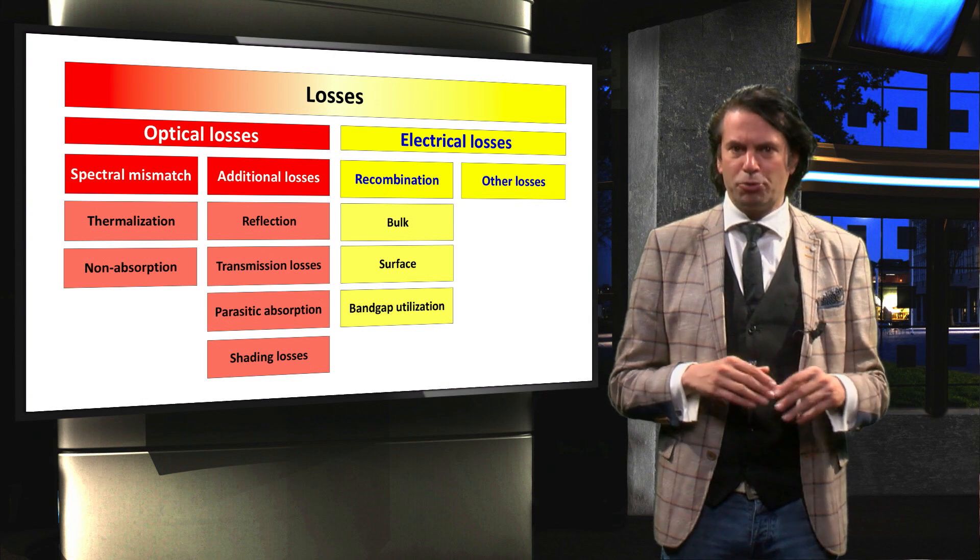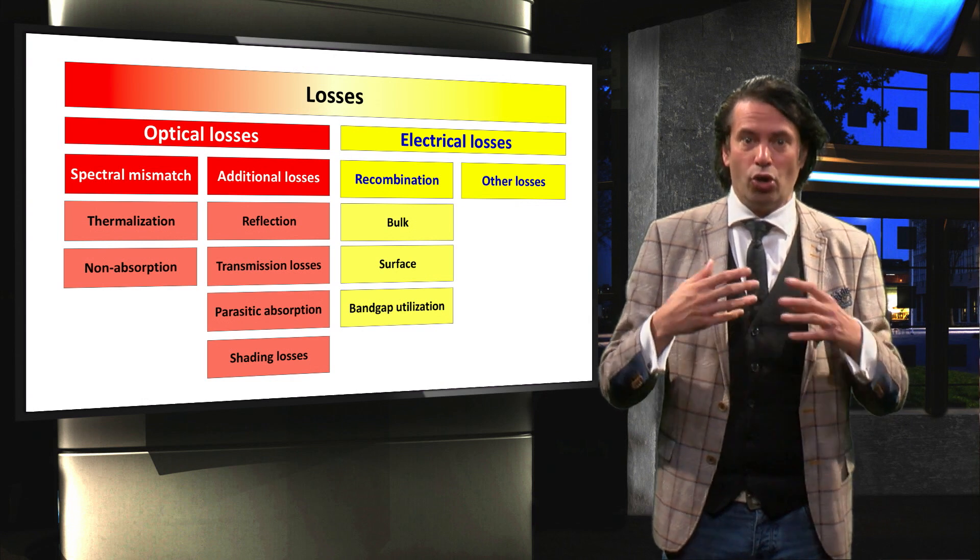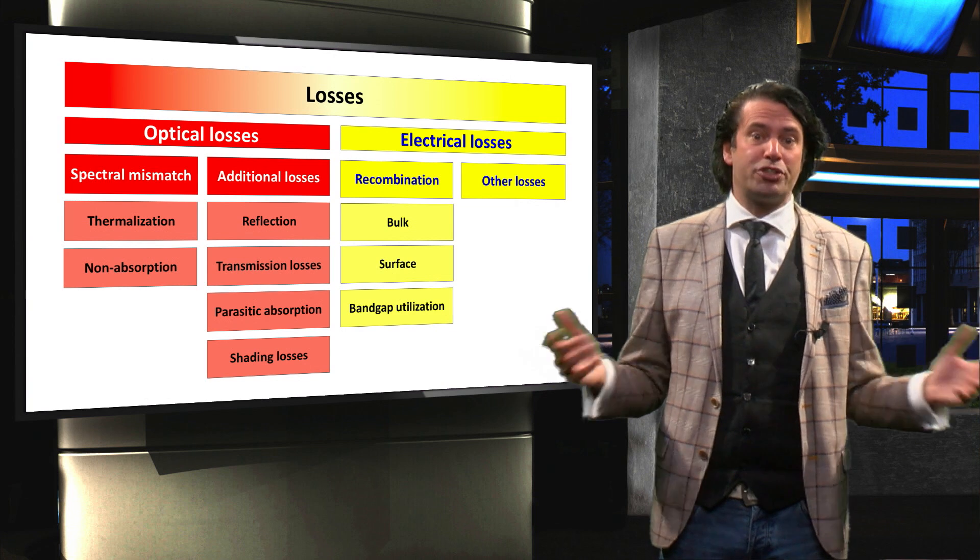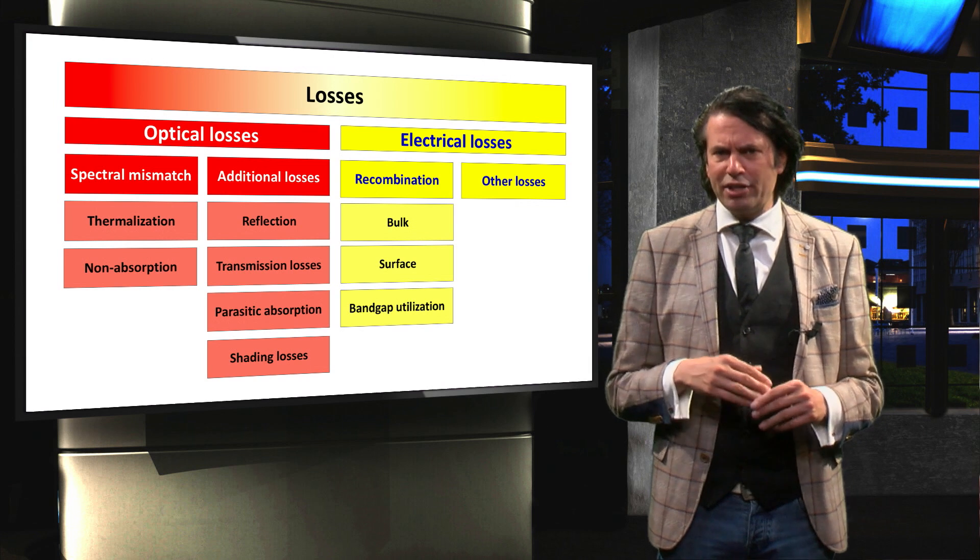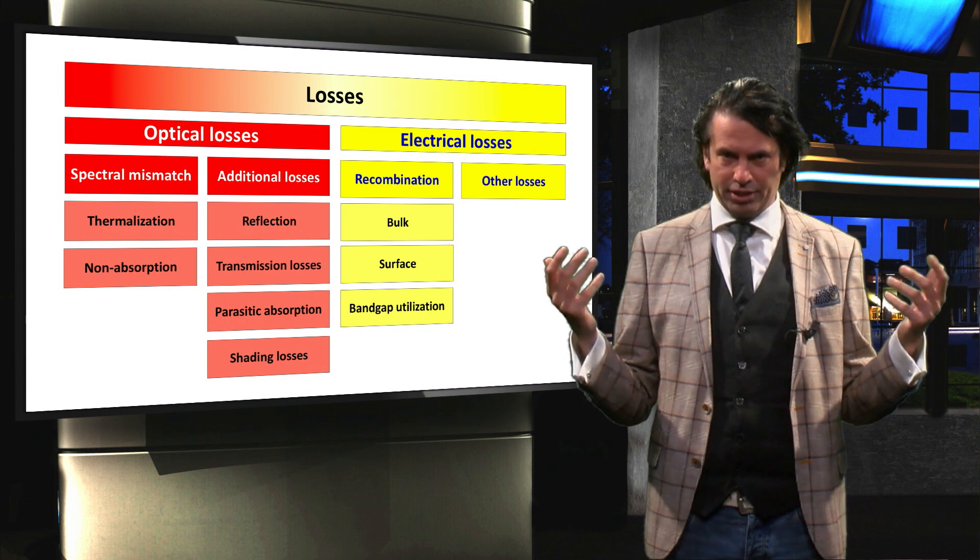If this happens, the absorbed energy is essentially lost and cannot be converted into electrical energy. In PV1X, we introduce three different recombination types.